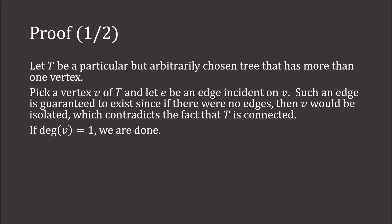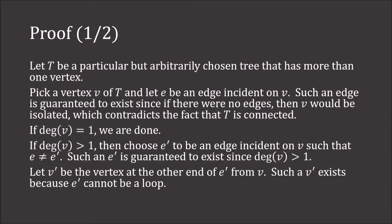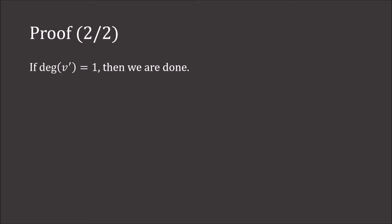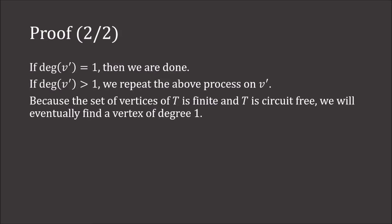If the degree of v is 1, then we're done. If however the degree of this vertex is greater than 1, then we choose e' to be an edge incident on v such that e is not equal to e', and this is guaranteed to exist because the degree is greater than 1. Now let v' be the vertex at the other end of e'; such a v' is guaranteed to exist because e' cannot be a loop. Now if the degree of this new vertex is 1, we're done. If it's larger than 1, then we repeat the process we just did, except now on v'. Now because the set of vertices of t is finite and because t is circuit free, we will eventually be able to find a vertex of degree 1, and the proof is complete.